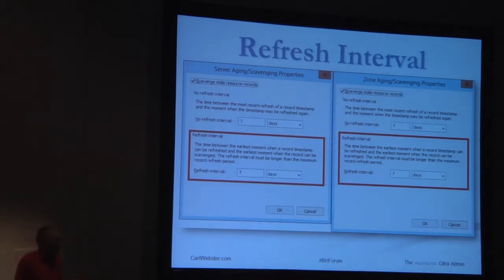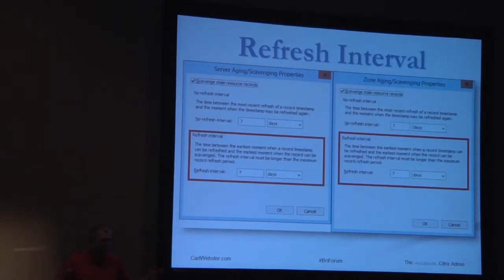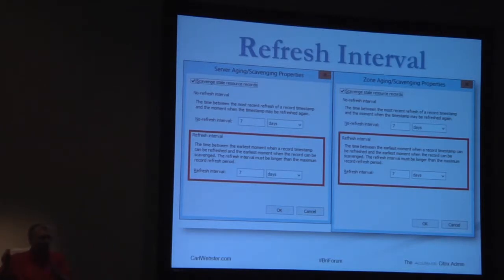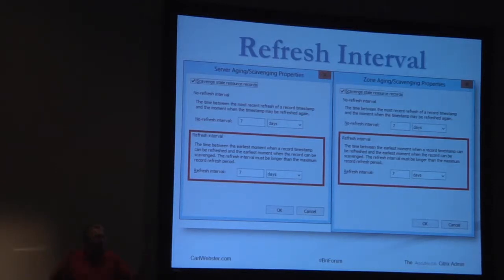The refresh interval says: after seven days I can be refreshed again. By default, what is the DHCP lease time? Eight days. The first DHCP lease renewal interval is 50%, or four days. The second is 87.5%, which is seven days. So by setting the no-refresh and refresh intervals both to seven days, Microsoft is giving that DNS record two full DHCP lease renewal time intervals to be refreshed.